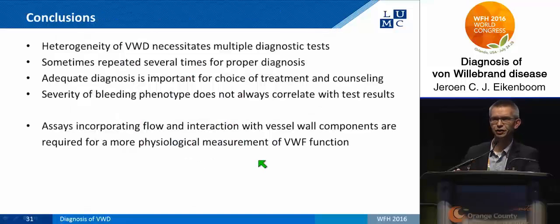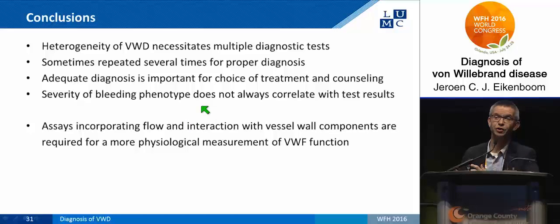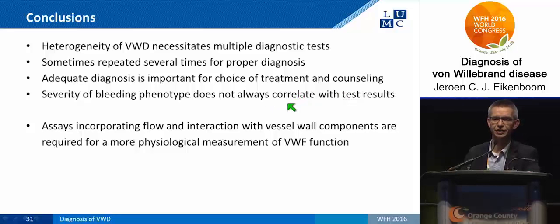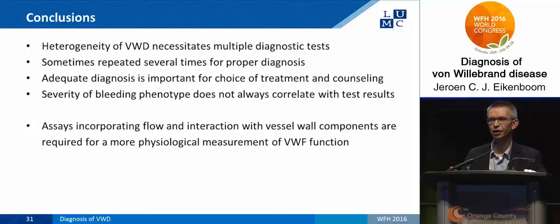To conclude, there is major heterogeneity in fulvirate disease that necessitates a wide array of diagnostic tests, which sometimes need to be repeated due to variability. An adequate diagnosis is essential for treatment choice and counseling. The severity of the bleeding phenotype does not always clearly correlate with test results — especially in patients with very fast clearance of the protein, where levels may be very low but the clinical phenotype may not be as severe as expected. All the tests described are done in plasma, but for a proper diagnosis and estimation of the real clinical bleeding phenotype, we are in need of tests that also incorporate flow and other factors — so there is still work to be done for even better diagnostic tests.